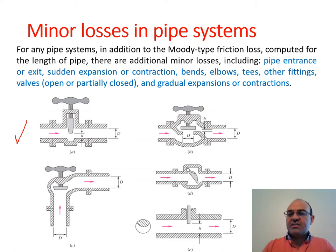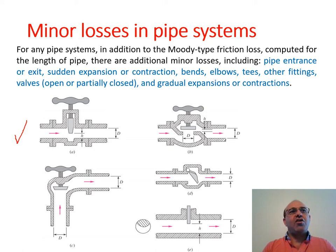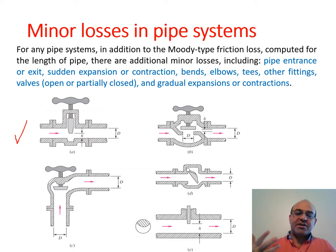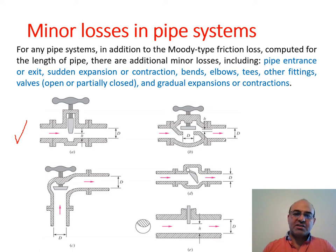We need to consider minor losses in order to size the pump — to find all of the losses and then design and size the right pump to generate a head equivalent to the total head lost due to major losses (friction) and minor losses.